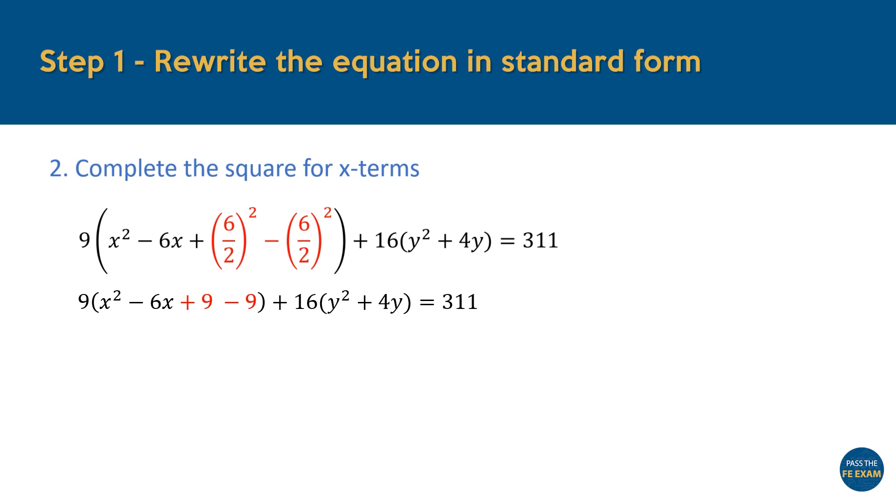From here, the first three terms within the brackets can be easily factored into X minus 3 squared using either mental math or a calculator. However, it's important to remember that the negative 9 term does not disappear. It forms part of the question, ensuring we maintain equivalence to the original form.